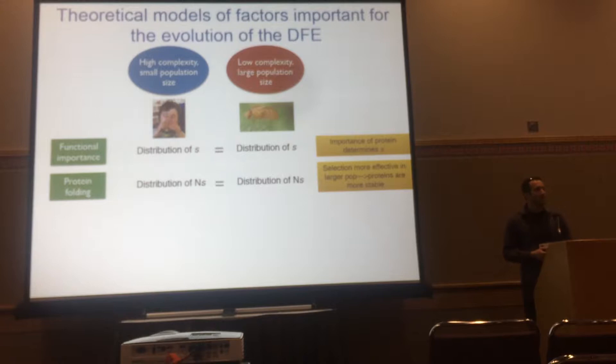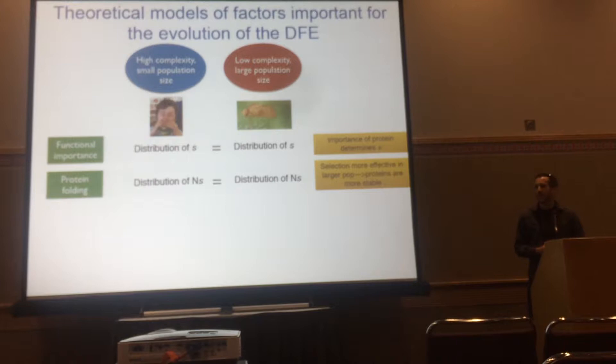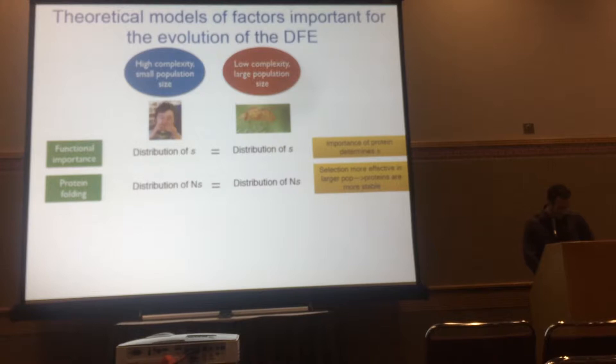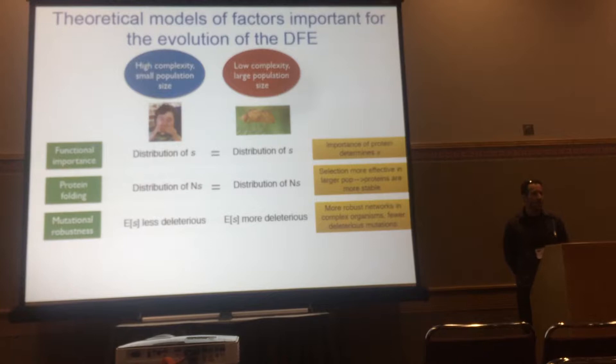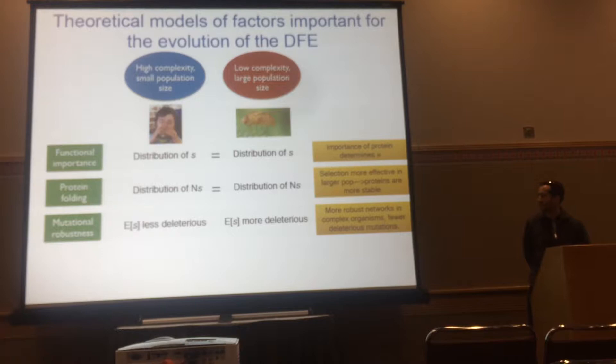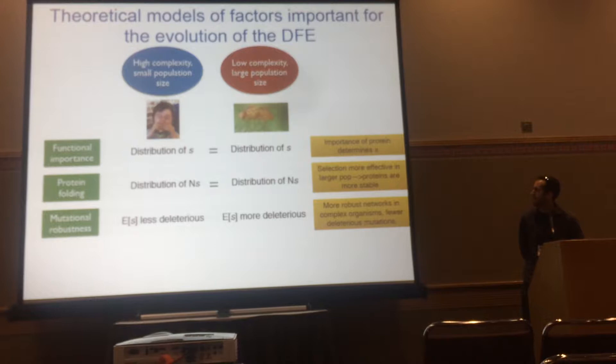In contrast, species with smaller population size have smaller N, but new mutations in less stable proteins will have a bigger effect on fitness. Under some conditions, these two factors would cancel out, making the distribution of NS similar across species. A third class, mutational robustness models, predicts that more complex species have more redundancy in pathways to compensate for deleterious mutations, so the average selection coefficient ought to be less deleterious than in less complex species.